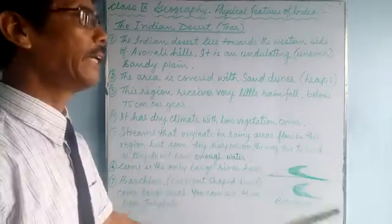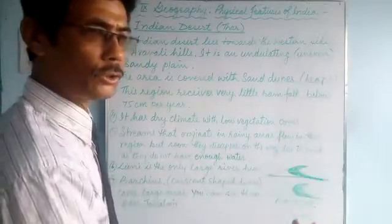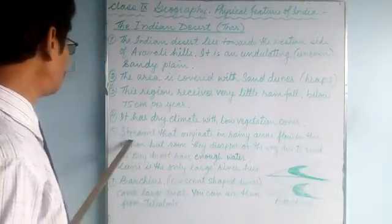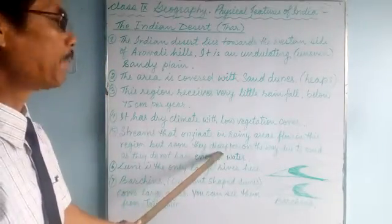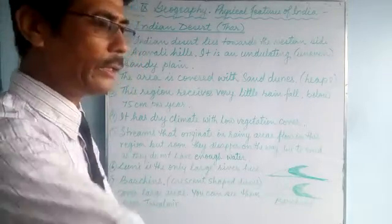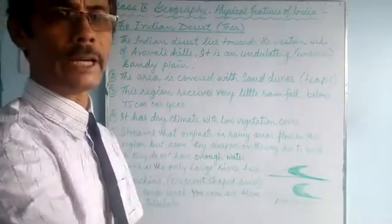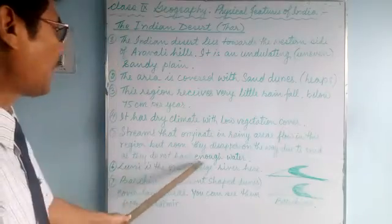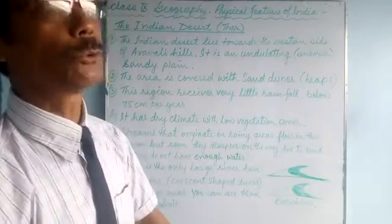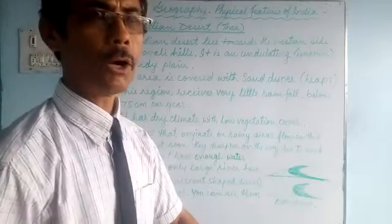The streams that originate in rainy areas start flowing towards the desert region, but while flowing, the water seeps inside the ground. They soon disappear on the way due to the sandy terrain — the water percolates inside rather than flowing over the surface. As they do not have enough water, some streams dry out on the way and do not reach farther places.